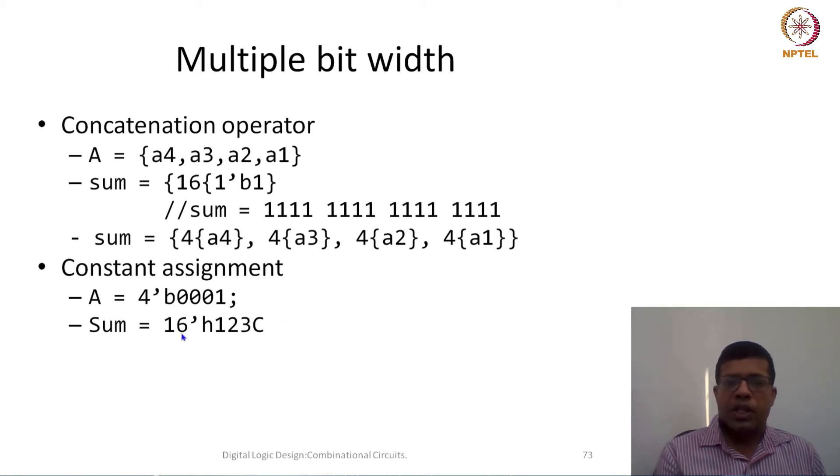What would happen if left hand side bits and right hand side bits don't match? If my left hand side is less, then the rest of the bits would be assumed as 0. If this is more than the bits which are in the higher significant here, they would be ignored.